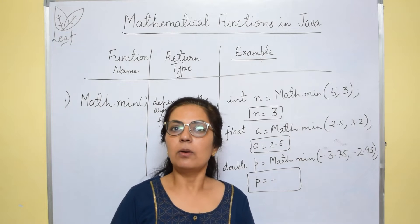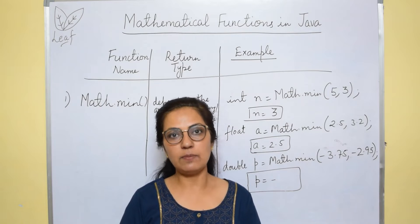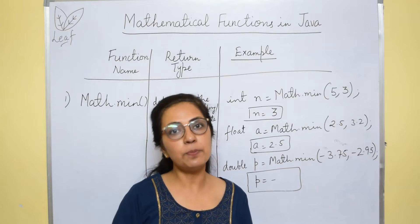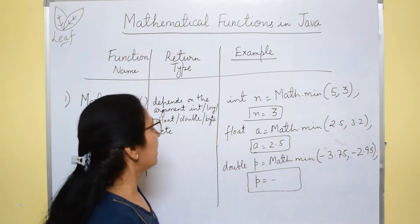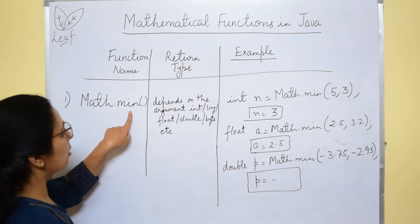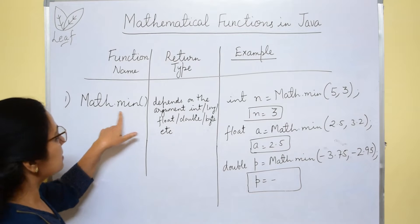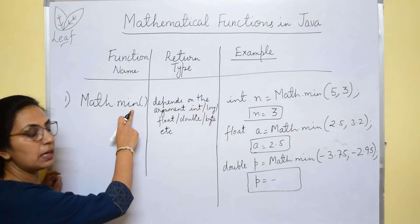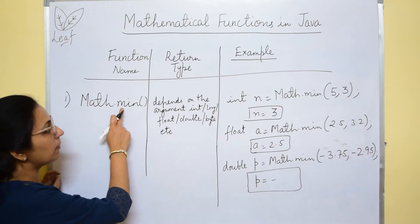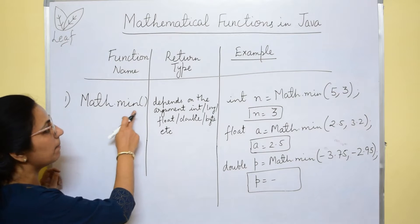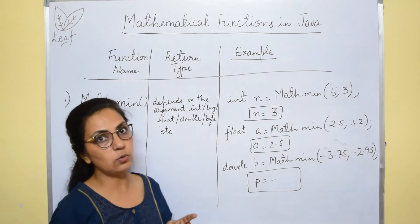By seeing most of the function names only, you can make out that for which purpose this function is meant. We begin with the first function math.min, and this min normally we use for minimum value. Math.min function returns the minimum of the two values given to it.